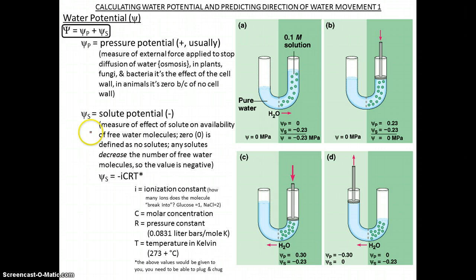Solute potential is negative and it decreases water potential because it occupies the free water molecules and decreases their availability. It's zero if there are no solutes in the solution. Any solutes in a solution would decrease the water potential. Wherever you have more solutes, you have less water. Where you have less solutes, you'll have more water.